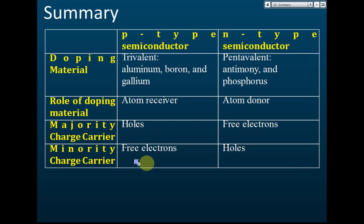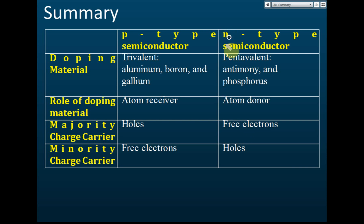For P-type semiconductor, the majority charge carrier is holes and the minority charge carrier is free electrons. For N-type semiconductor it is the other way around — the majority charge carrier is free electrons, because N-type means negative, meaning there are a lot of free electrons, and the minority charge carrier is holes.